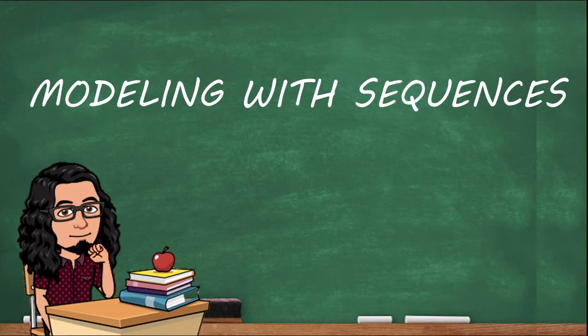Before we start let's remember that there are two types of sequences, arithmetic and geometric. In the arithmetic we're gonna use addition. It has a slope-intercept form and a constant rate of change. The geometric we're gonna multiply. This has an exponential growth and it has different rates at each term.